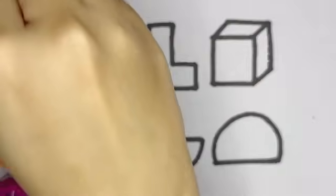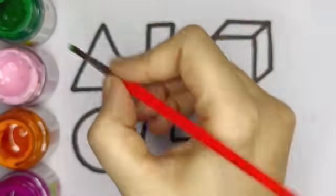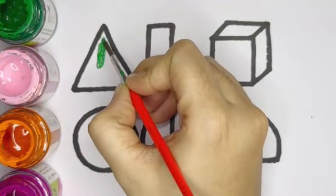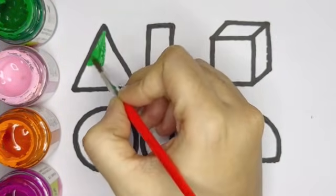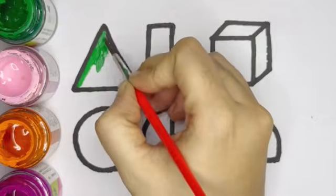Now let's color the shapes. Green color. This is green color triangle.